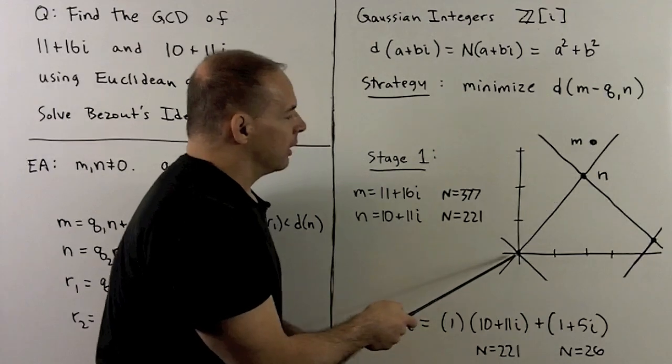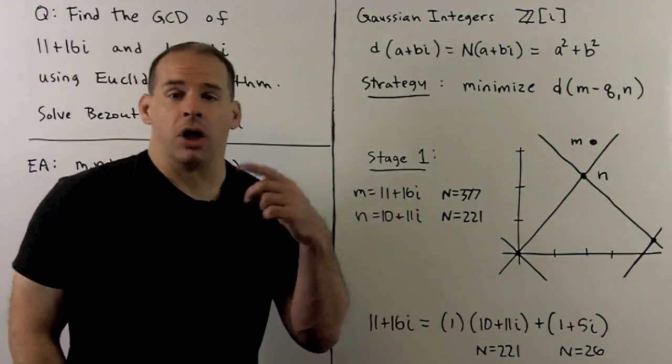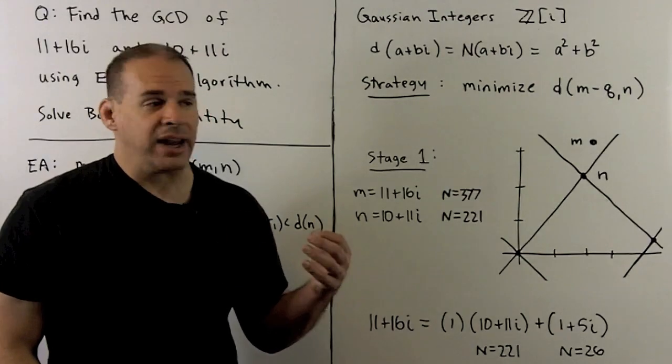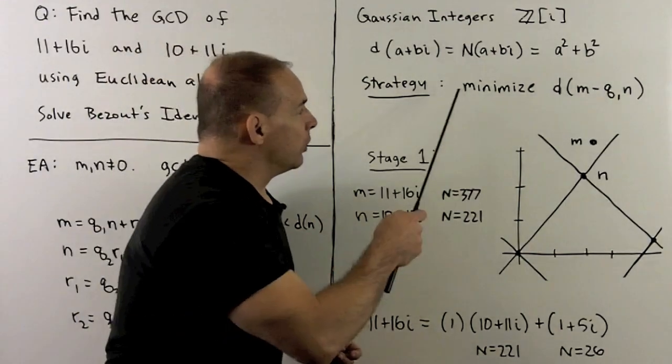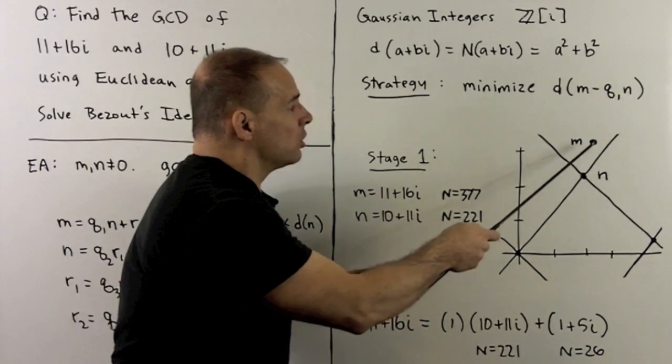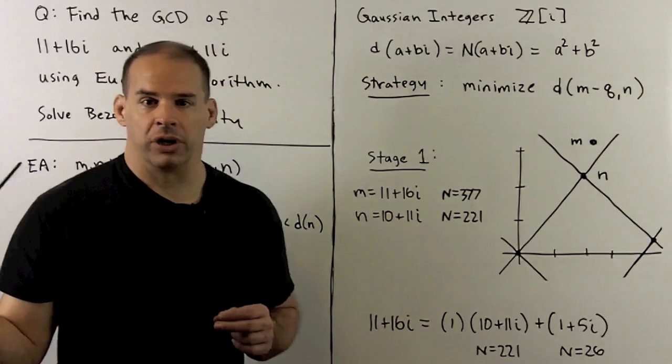When I multiply n by in, here we get something over here, going by 90 degrees. Then we take all linear combinations of n and in over the integers. So we get a lattice. Then what we're doing here is just trying to find the lattice point that's closest to m. And that's going to be guaranteed to satisfy our condition.